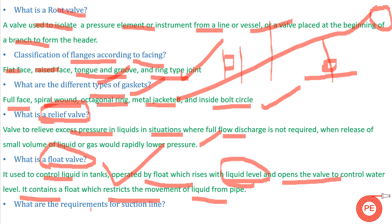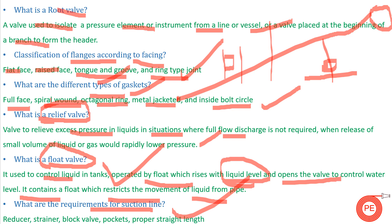The last question for today is: what are the requirements for a suction line? While designing a pump suction line, we should have a reducer, a strainer, a block valve, and a proper straight length of pipe. All these elements are essential to avoid problems such as cavitation.